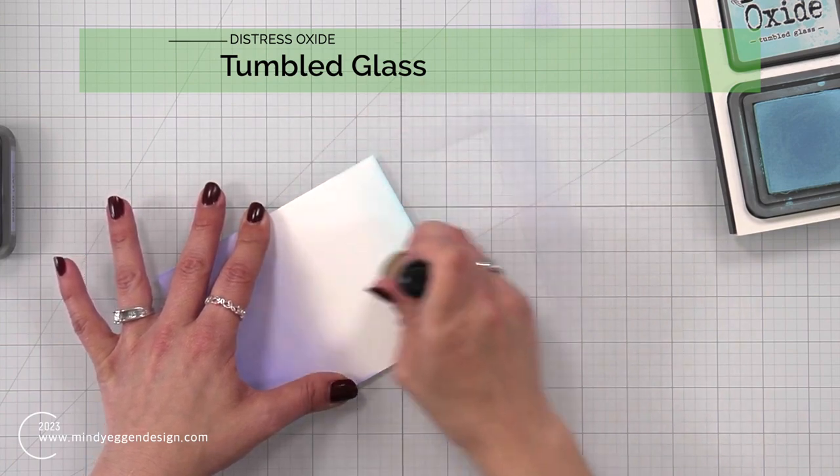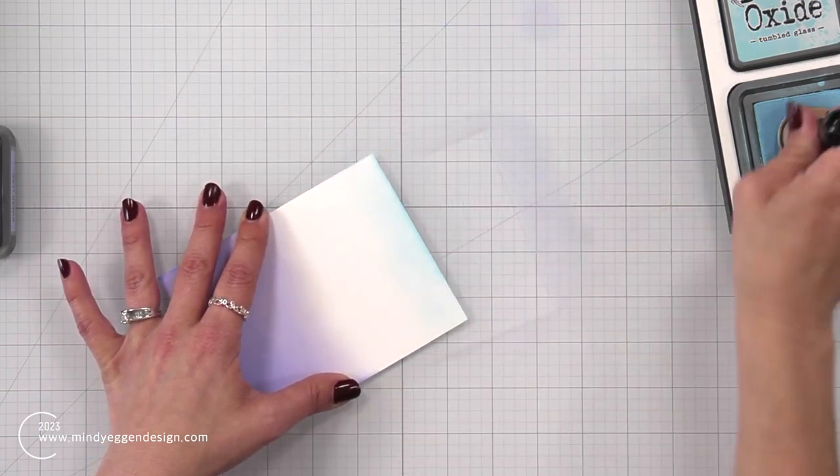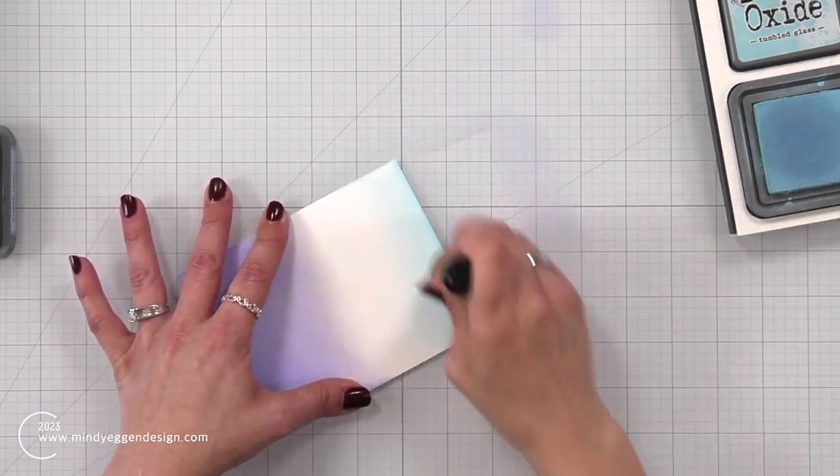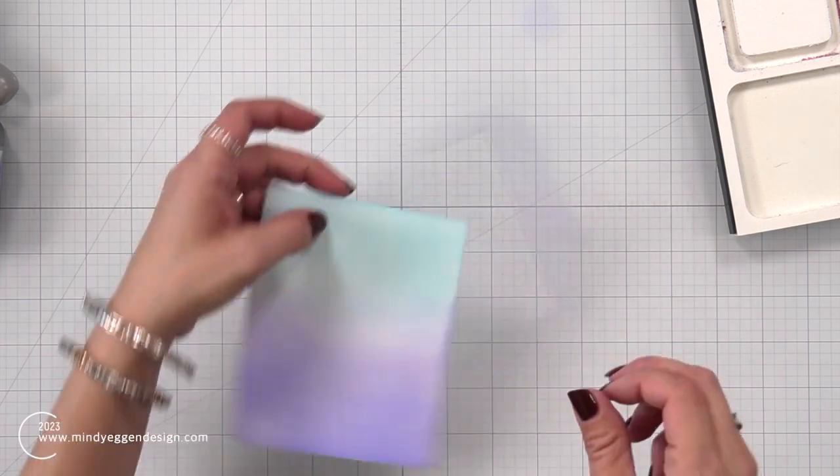Then on the other end, I'm bringing in tumble glass, and these are going to overlap slightly, but I don't want it to be very intense. I want it to be very soft so it kind of has a whimsical look.